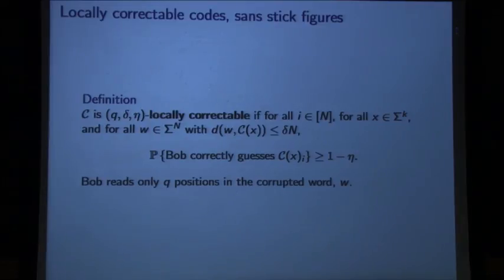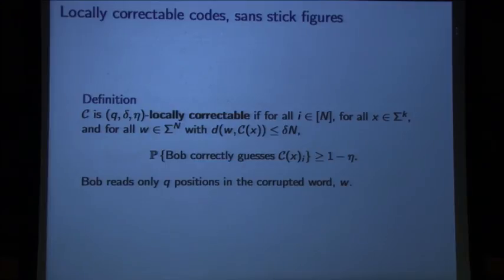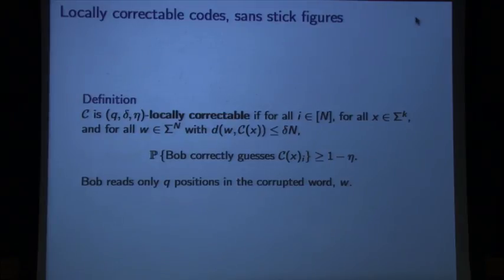The decoding algorithm will be randomized, and it has to be randomized because of the way the quantifiers are set up: for all indices, for all messages, and for all possible corruption patterns, you should have a good probability of getting the symbol correct. If it were deterministic, the adversary could always break things, because if the adversary knew Bob was going to make exactly those q queries, he could just corrupt those points and Bob would have no chance of decoding. And if you just wanted the average probability over all indices, even the identity code works — but you want this to hold for all indices and all corruption patterns.